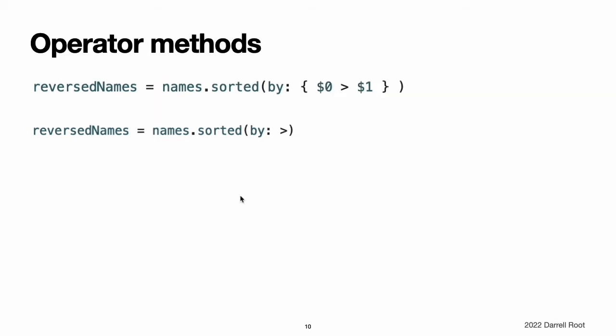Operator methods. There is actually an even shorter way to write the closure expression above. Swift's String type defines its string-specific implementation of the greater-than operator as a method that has two parameters of type String and returns a value of type Bool. This exactly matches the method type needed by the sorted-by method. Therefore, you can simply pass in the greater-than operator, and Swift will infer that you want to use its string-specific implementation. For more about operator methods, see Operator Methods.